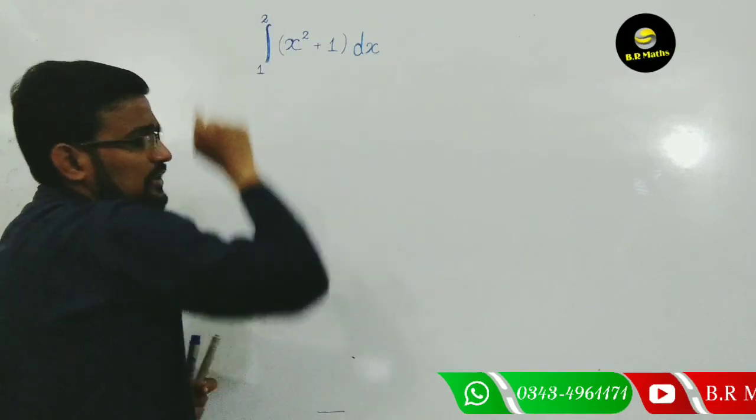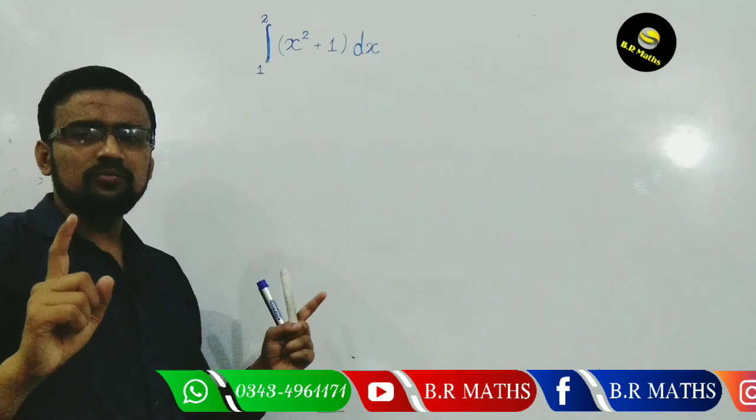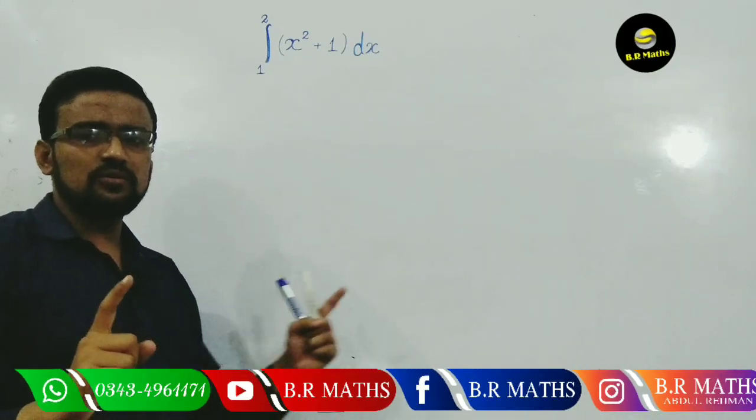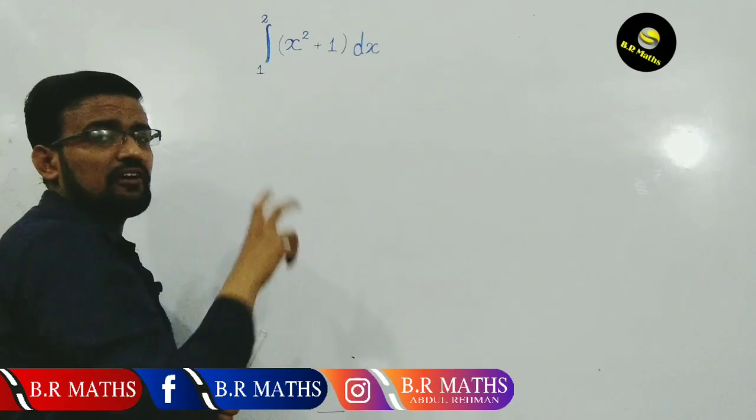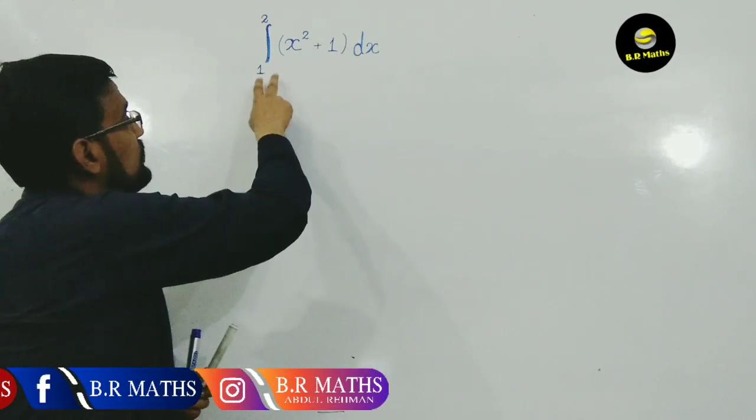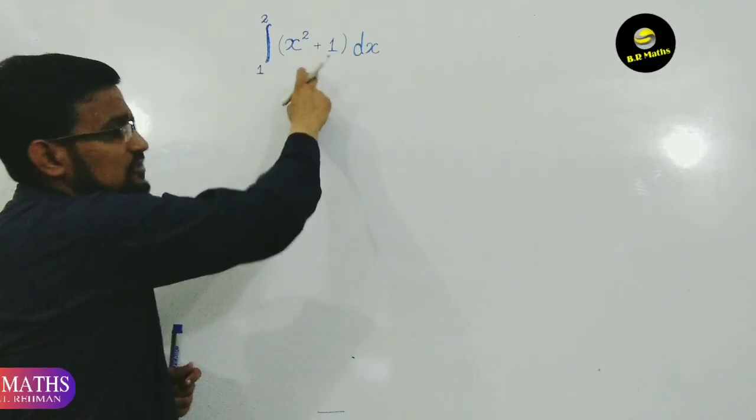It means the area under the curve from x equals 1 to x equals 2. So this is called finite or definite integration. Firstly, find the integration of this one.